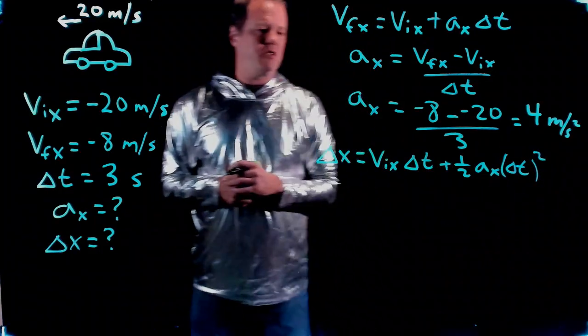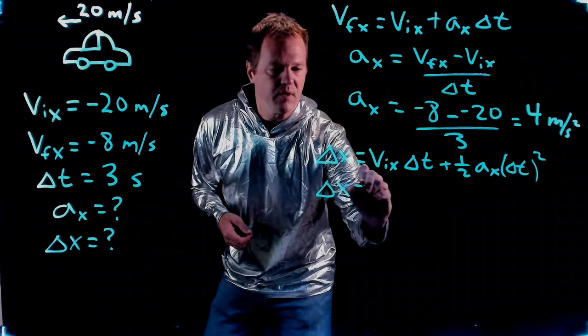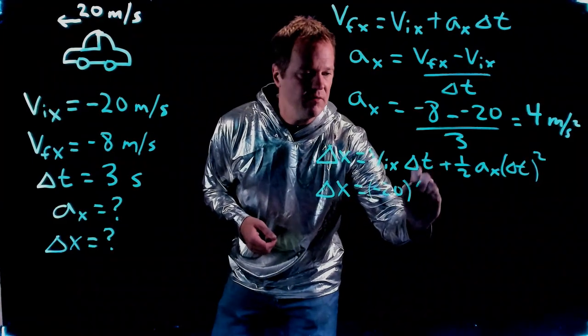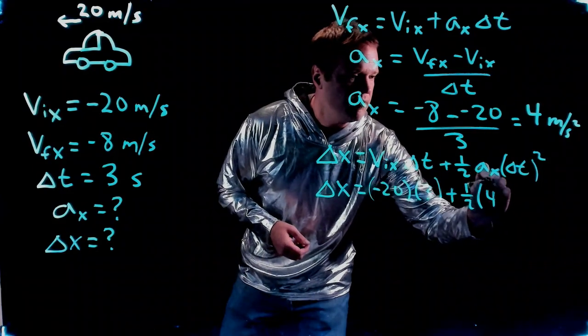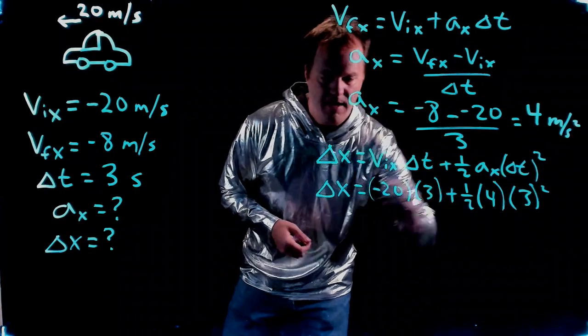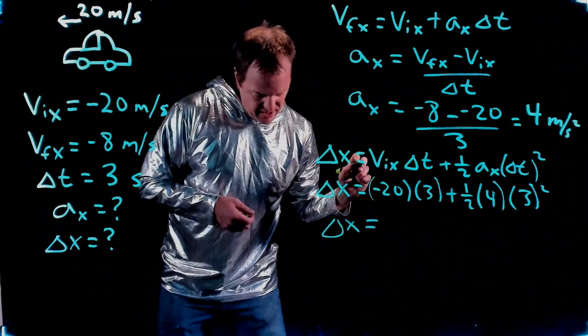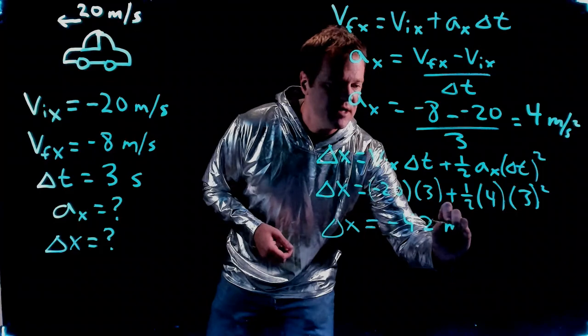It's just a matter of plugging in the numbers: initial velocity of minus 20, time interval of 3, acceleration of 4. When I throw that into my calculator, it spits out negative 42 meters. That's intuitive - the car is moving to the left, so the displacement is to the left.